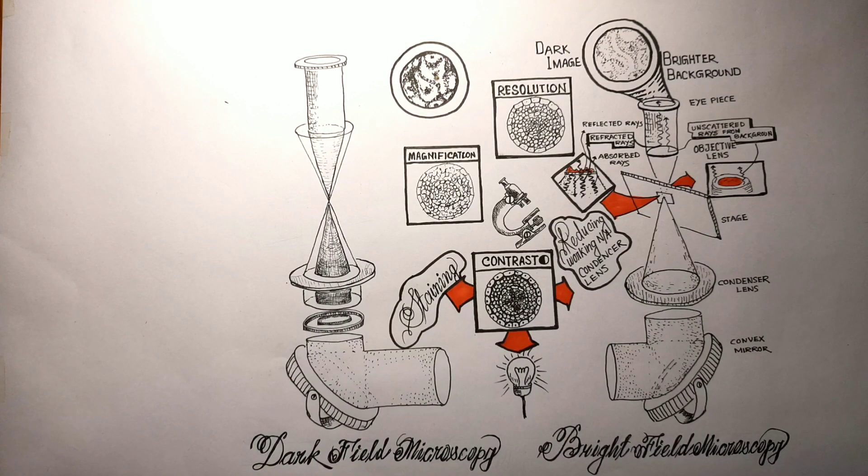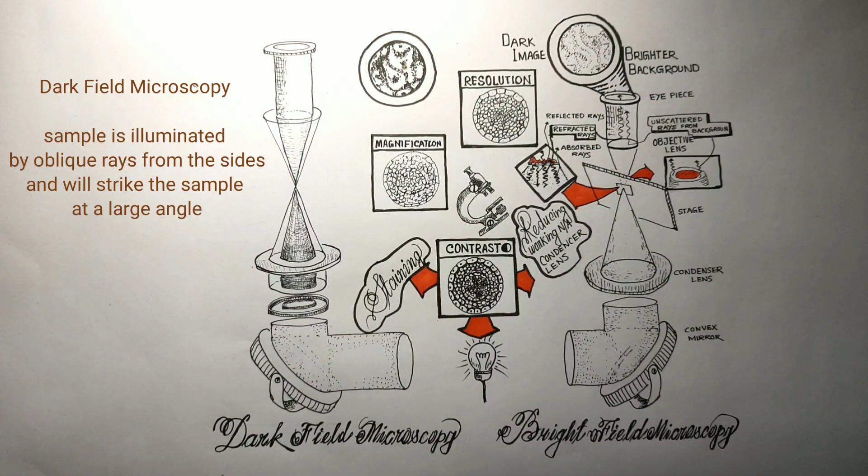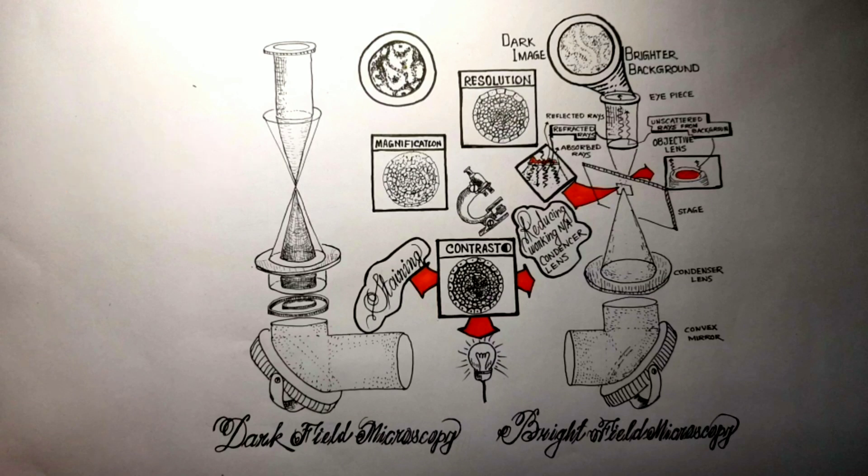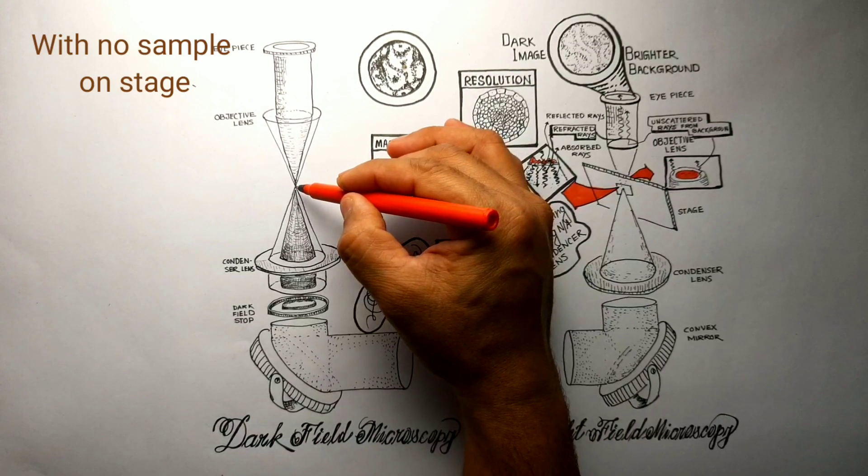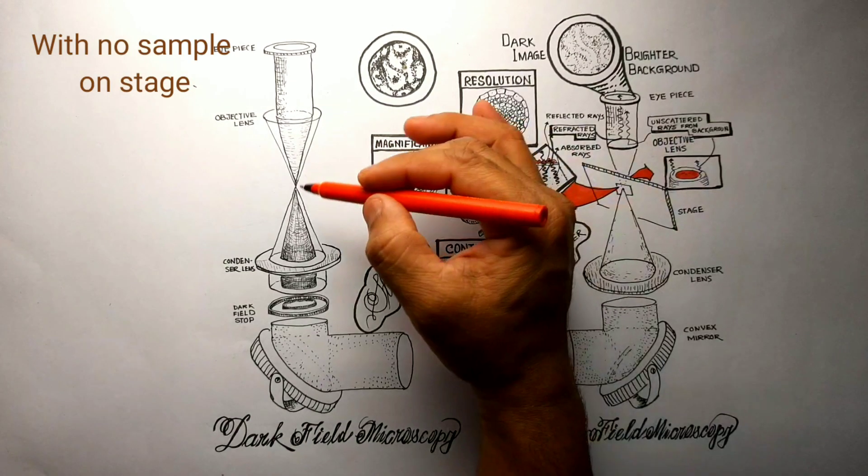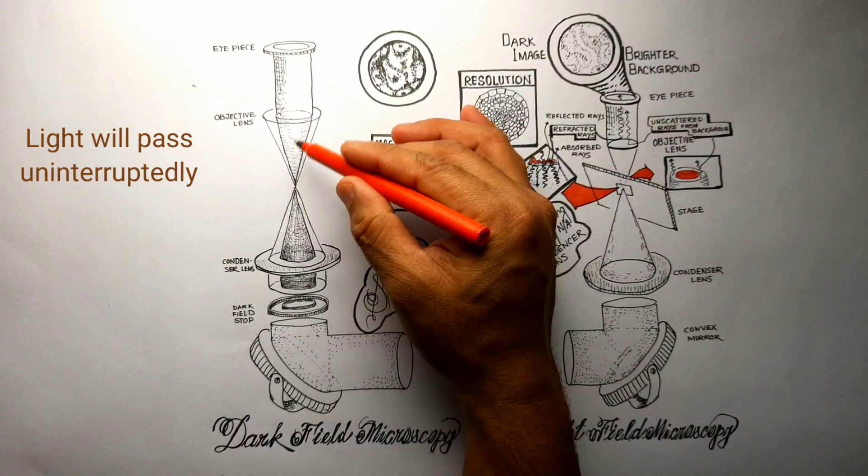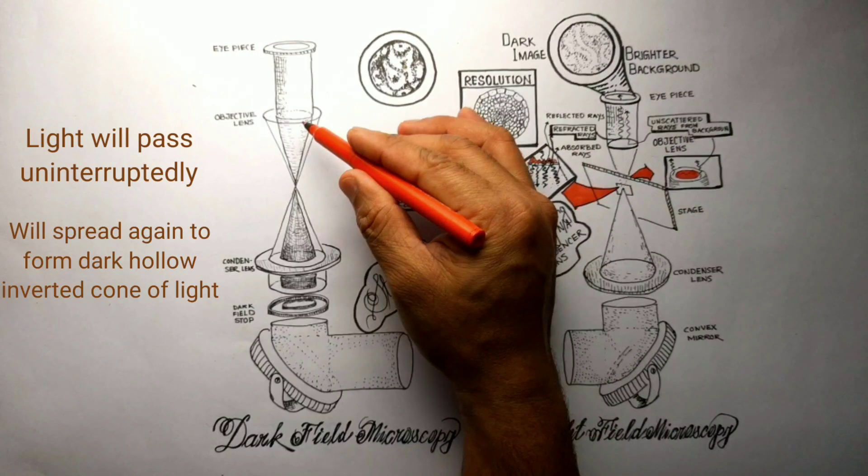In dark field microscopy, the sample is not illuminated from below like bright field microscopy, but from the sides at the plane of the sample. After illumination, if no sample is placed on the stage, the light will move past the specimen plane and spread again to form a hollow cone of light.